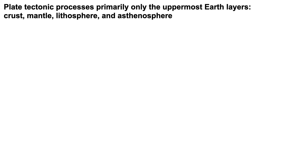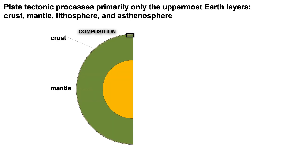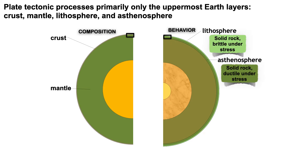For plate tectonics, we're mostly concerned about the uppermost earth layers — both compositional and behavioral layers. Primarily the crust and the mantle, and also the lithosphere, the solid brittle layer, and the asthenosphere, also solid but ductile.